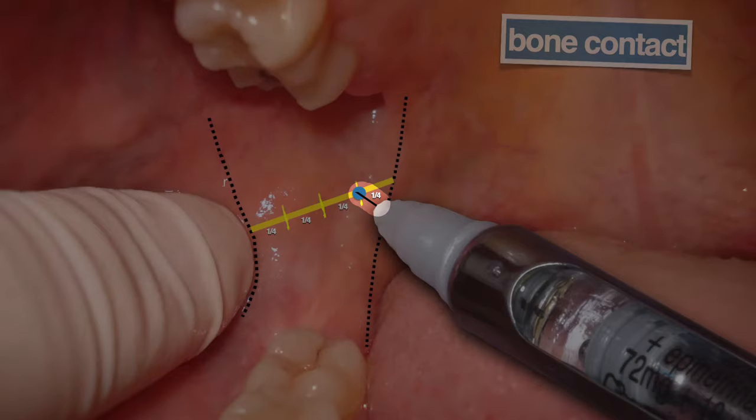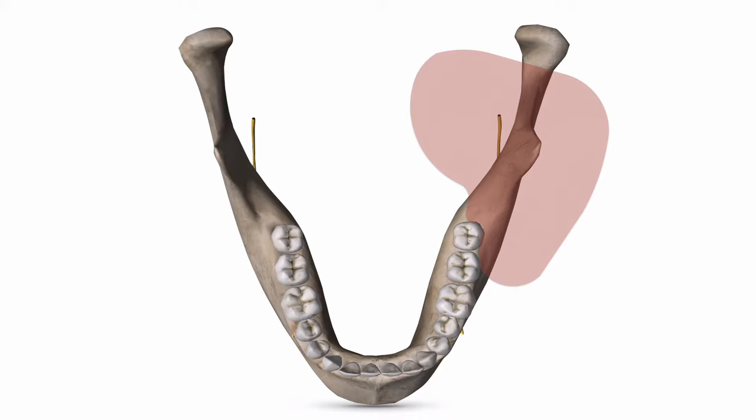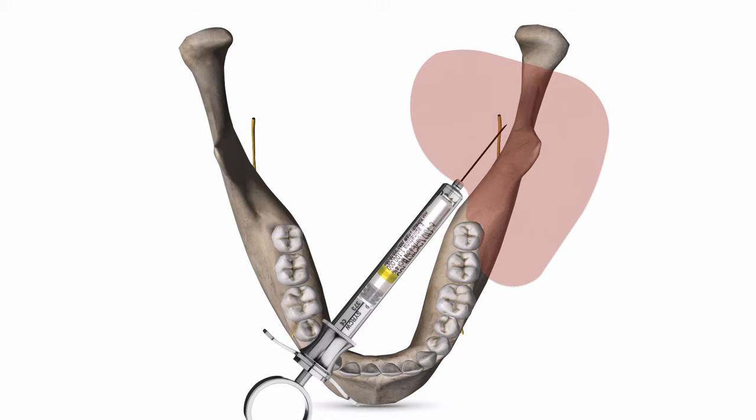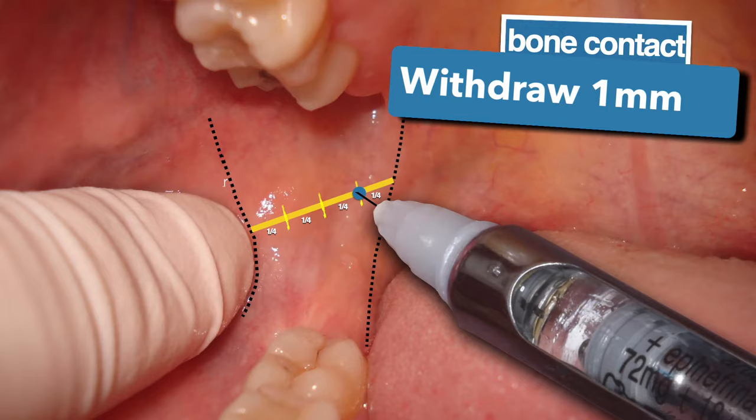If the patient makes some sudden movement and the needle breaks, it usually breaks at the junction with the hub — this way it can be more easily removed. If you inserted the entire needle and did not touch the bone, your puncture point is too posterior or the body of the syringe is too anterior at the level of the first premolar, and you need to modify and reintroduce it.